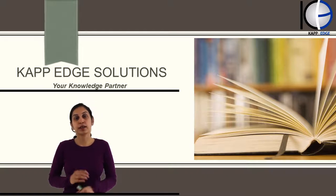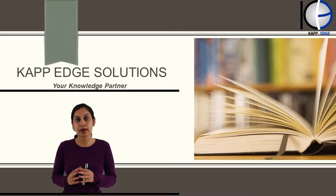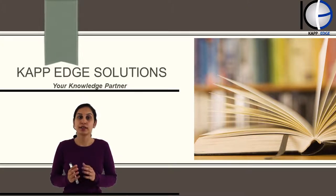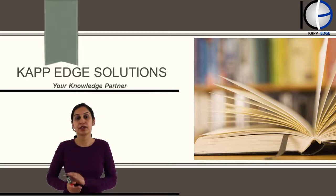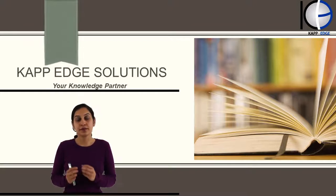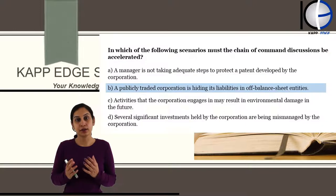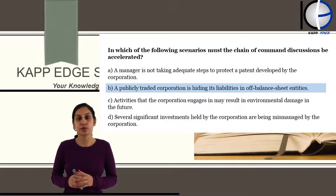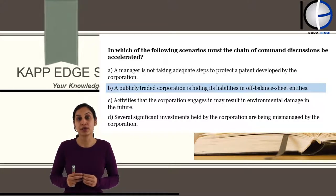Imputed liability means a company is liable by the acts of its employees. As we already understood, there is something called a Principal-Agent Relationship. The principal is always bound by the acts of an agent. So whenever an employee does something wrong, management is equally responsible for those acts. That is what we call imputed liability.